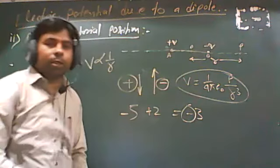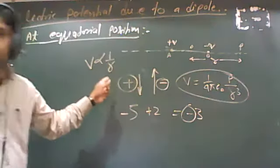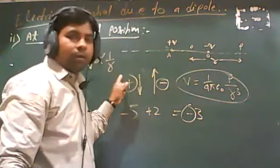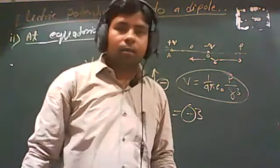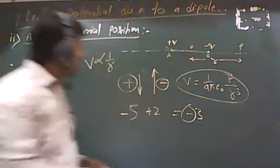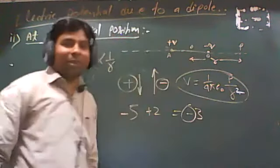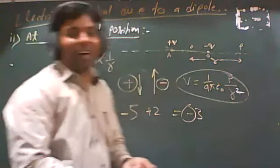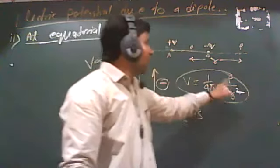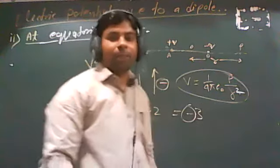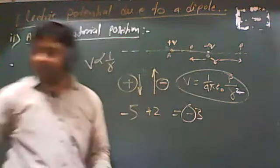The formula is confirmed: V equals 1 upon 4 pi epsilon naught, P upon R squared — not R cubed. R cubed appears in the equatorial position case. So for the axial position it is R squared. Clear.